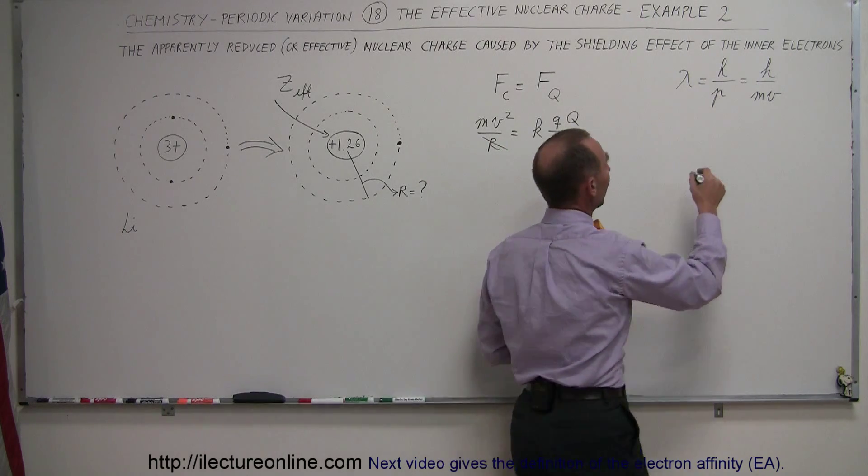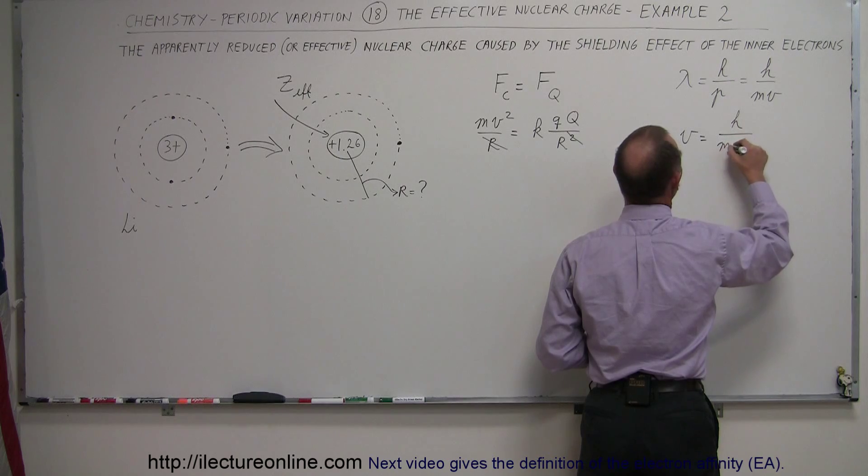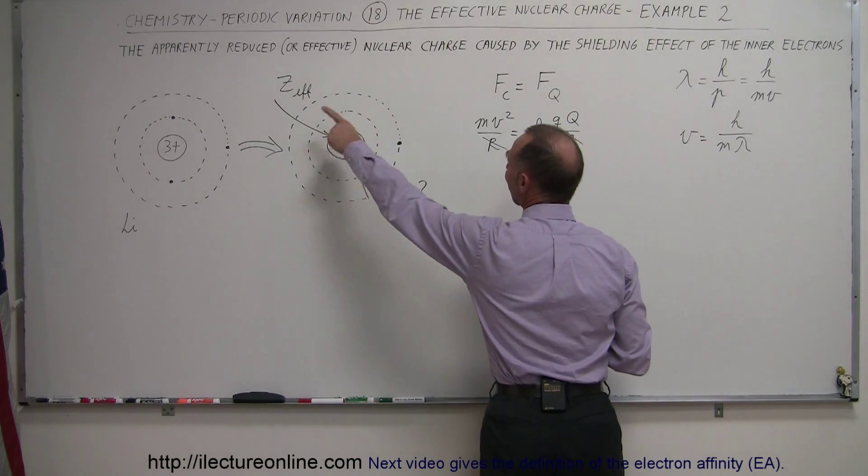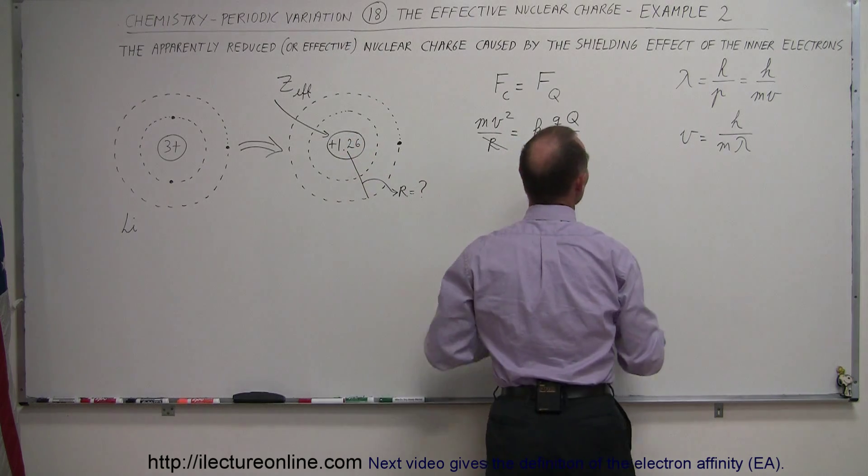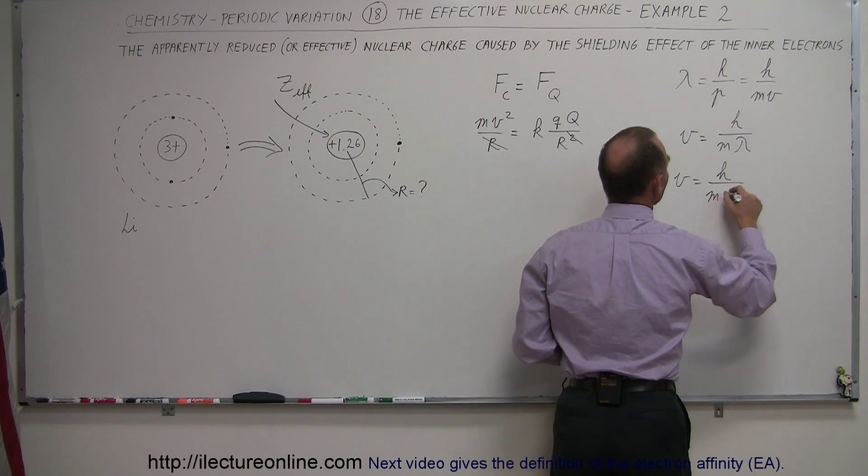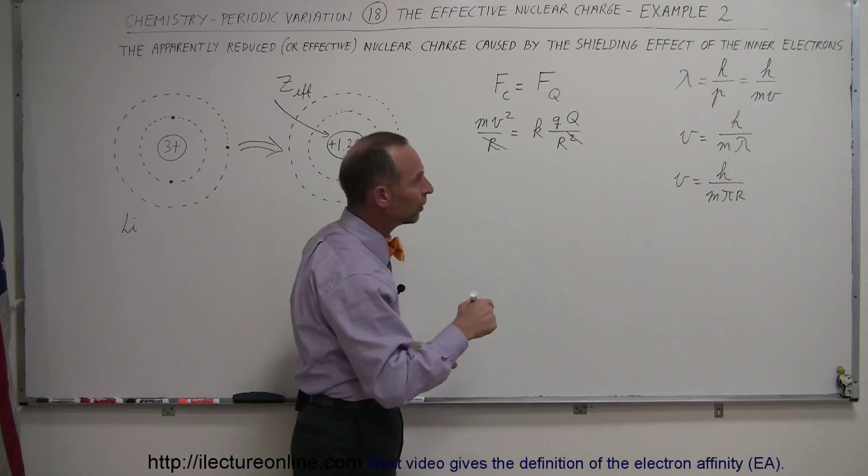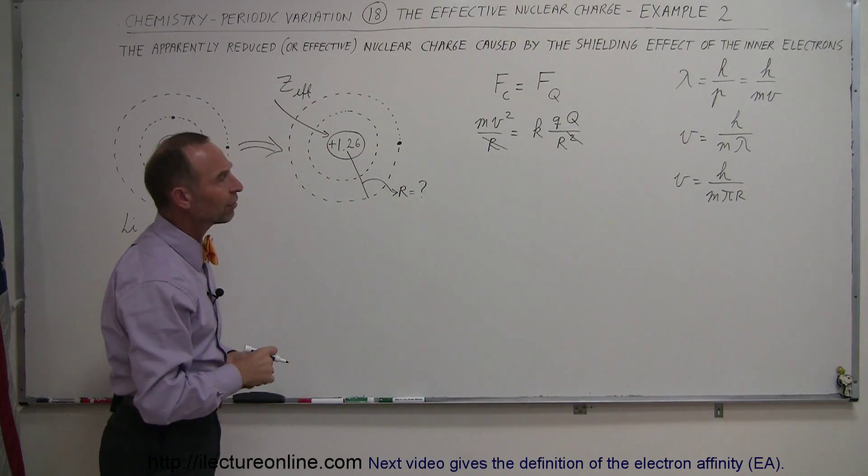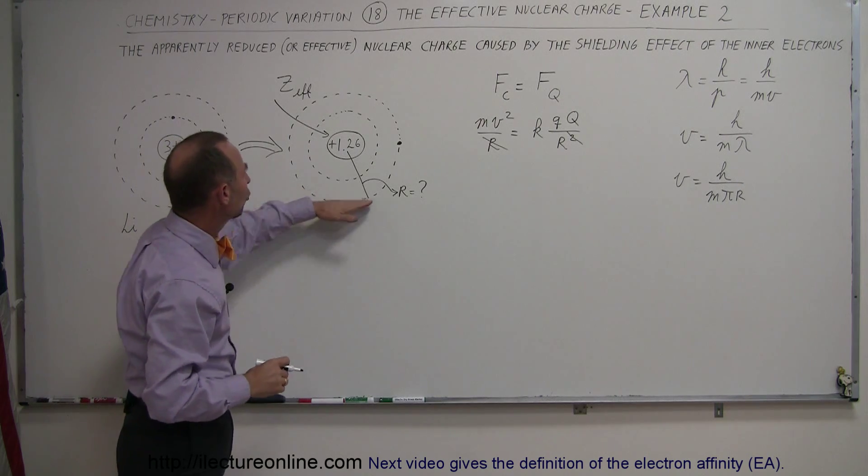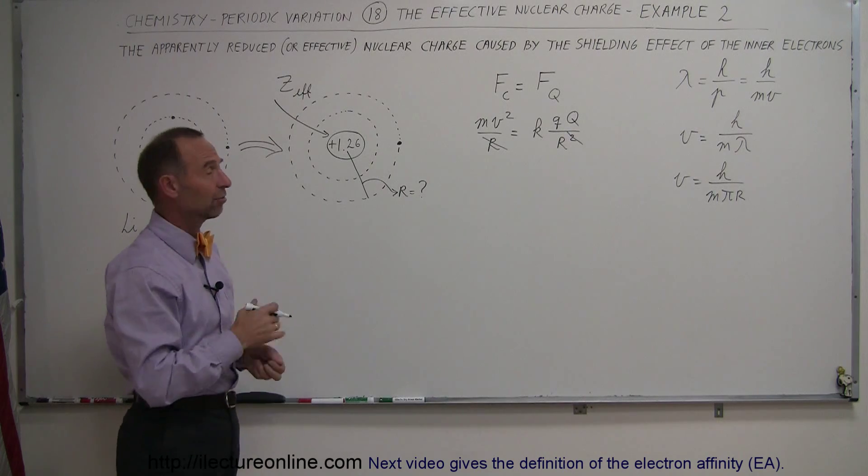So if we solve that equation for velocity, we can say that velocity is equal to h divided by m times the wavelength. And since the wavelength is going to be equal to half a circumference, it's going to be equal to pi times r. So v is equal to h divided by m times pi r, which is a half a circumference, a half orbit, since in the second energy level the electron moves around the path with two wavelengths being equal to the full circumference, or one wavelength equal to a half circumference.